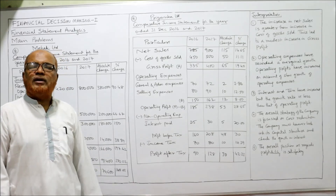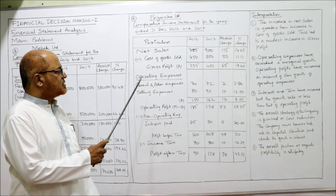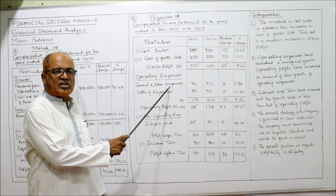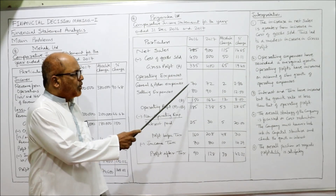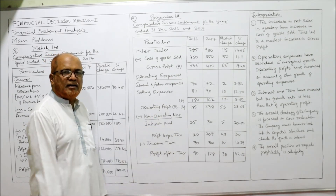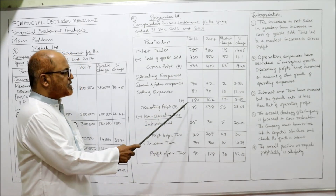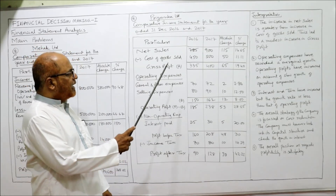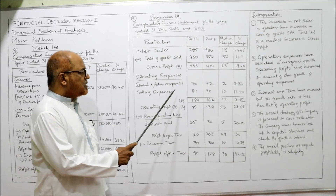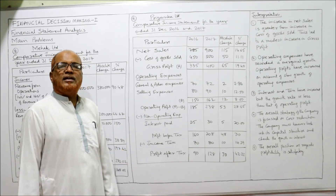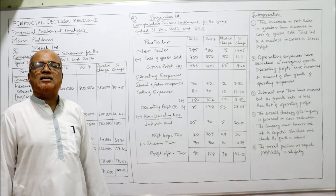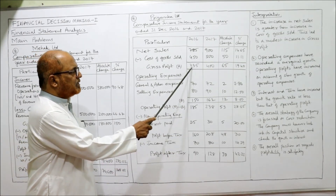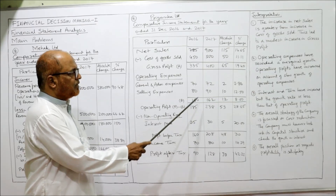From gross profit we deduct operating expenses. Two operating expenses are given: general and administration expenses and selling expenses. Take both figures for last year and current year. Total operating expenses: 150 last year, 162 current year (denoted as B). Gross profit is denoted as A. Operating profit = A minus B: 335 minus 150 = 185 last year; 400 minus 162 = 238 current year.